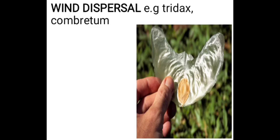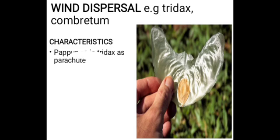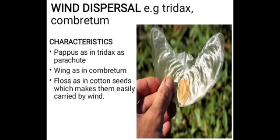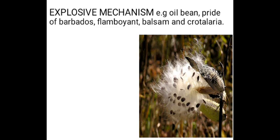Let's now move on to wind-dispersed fruit or seed. Examples include Tridax and Combretum. Their characteristics: number one, they have a pappus, like in Tridax, that acts as a parachute; Combretum has wings, just like the picture shown on the screen. Cotton seed has floss which allows it to be carried by wind. They also have light weights, some are dry, and the seeds are always flat.